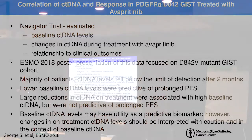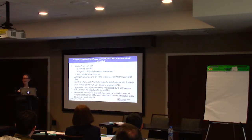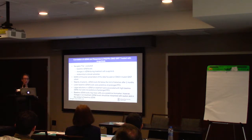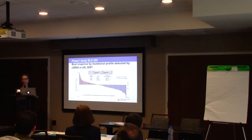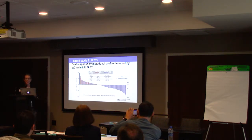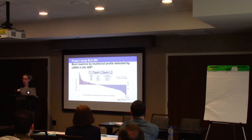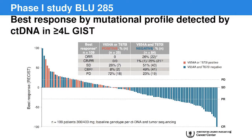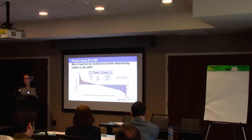So it was actually the baseline ctDNA level that gave the most information regarding how patients did. Intuitively, you would think a large reduction in ctDNA level would also be important in terms of outcomes on therapy — this shows we have a lot more to learn. Also, ctDNA was able to stratify patients who did well versus those who did not, showing that responding patients were more likely to be negative for KIT exons 13 and 14 mutations.